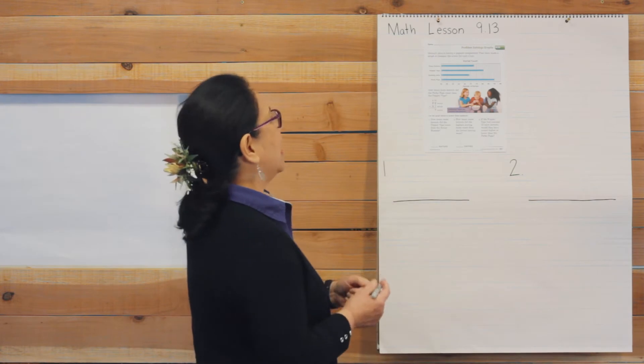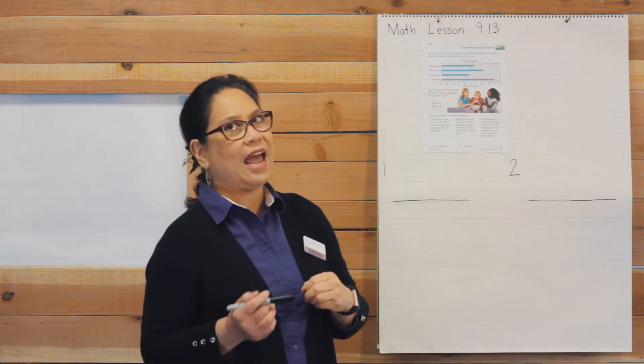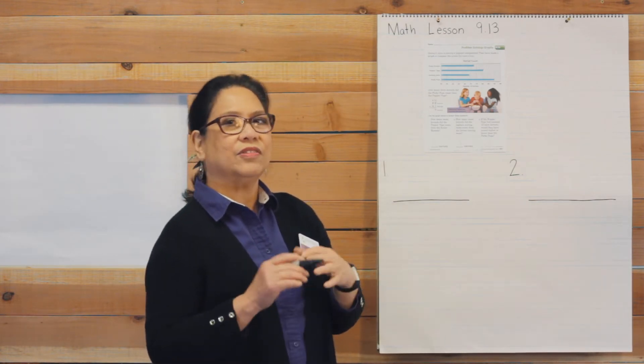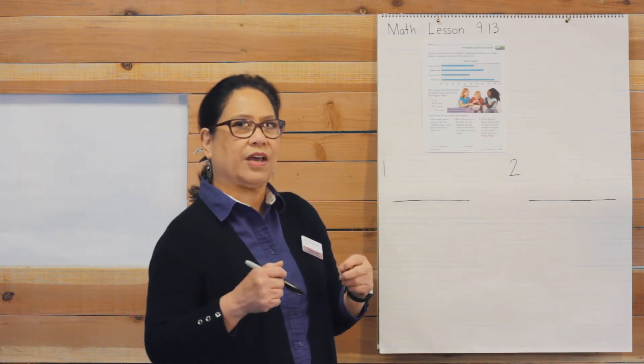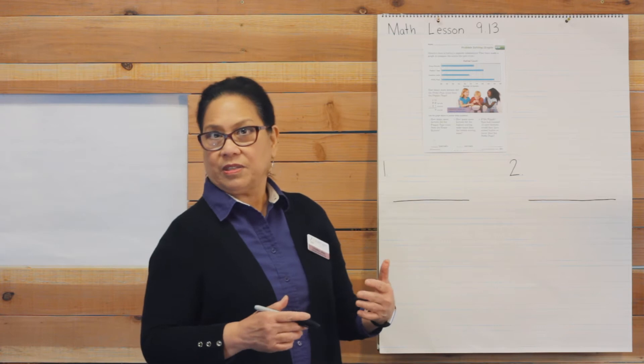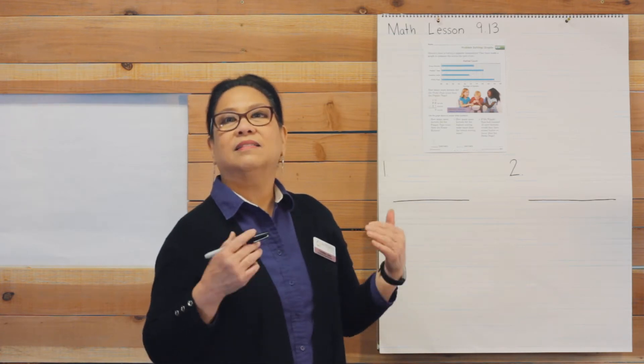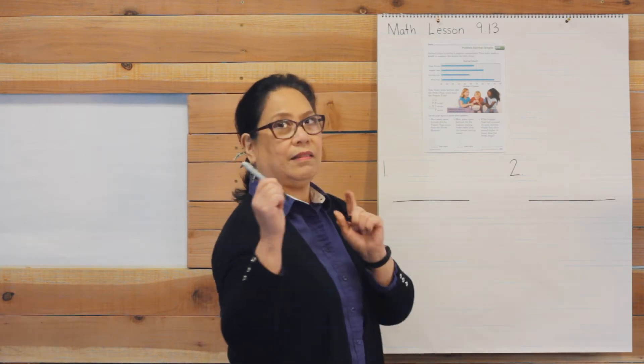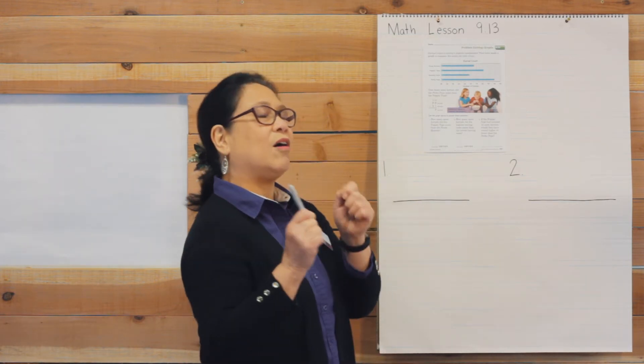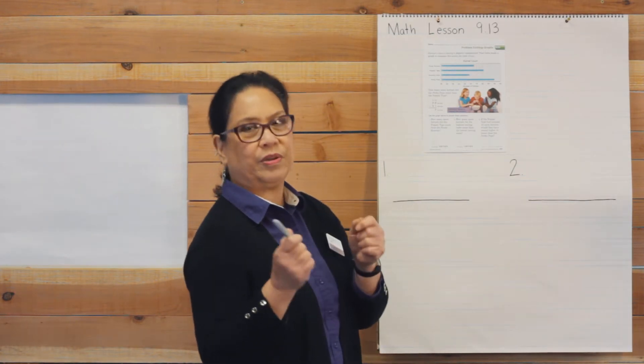But the question now is, how many more than? So that is the clue, more than. When you hear those two words together, it is, what's the operation? Takeaway. That's right. So let's put the whole number first, right? Always start with a big number when you're doing takeaway.